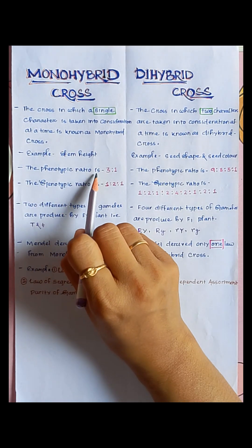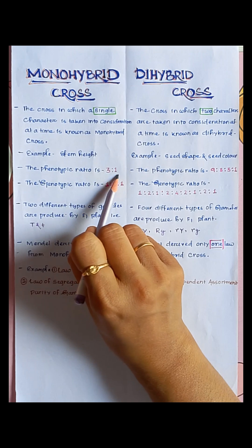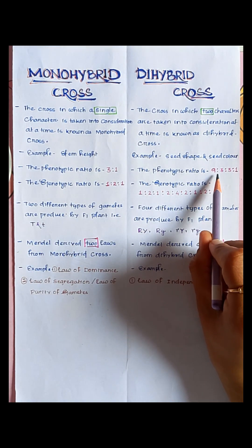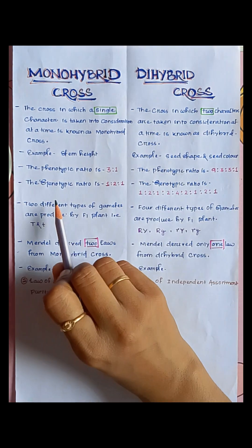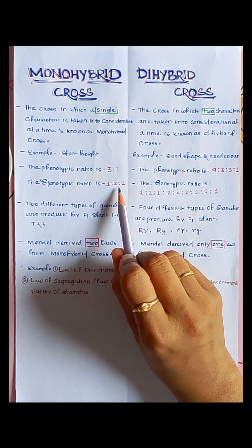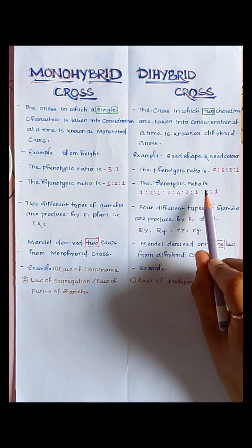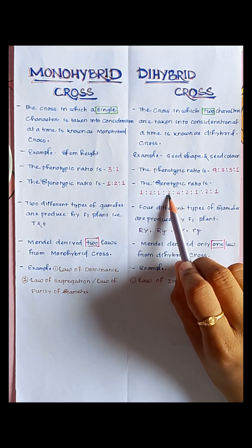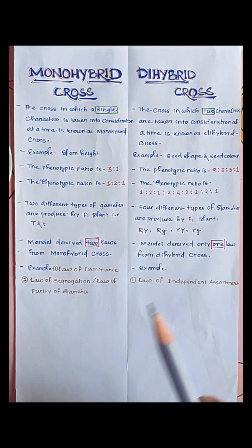The phenotypic ratio of monohybrid cross is 3:1. The phenotypic ratio of dihybrid cross is 9:3:3:1. The genotypic ratio of monohybrid cross is 1:2:1, and the genotypic ratio of dihybrid cross is 1:2:1:2:4:2:1:2:1.